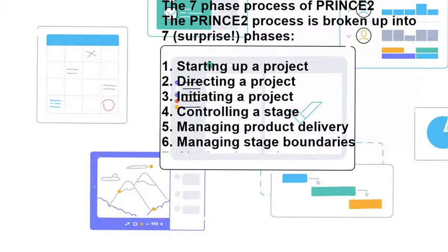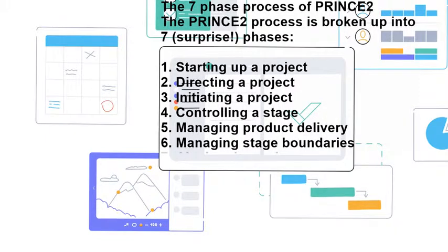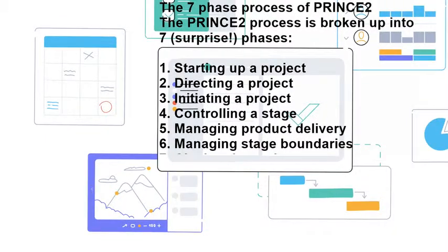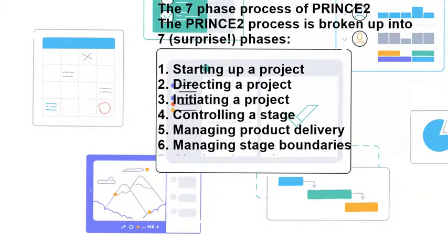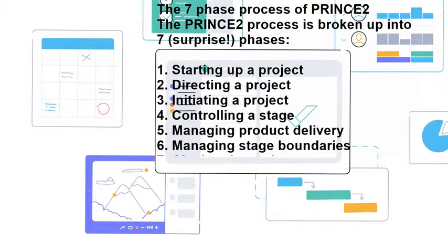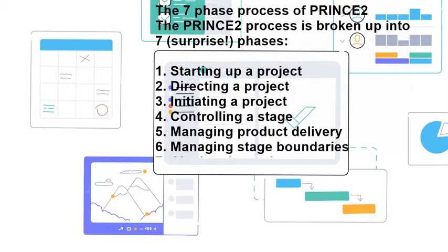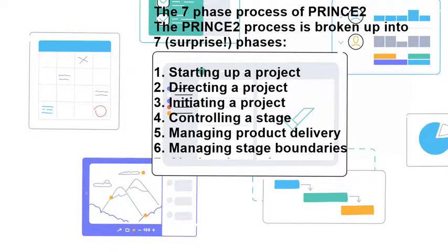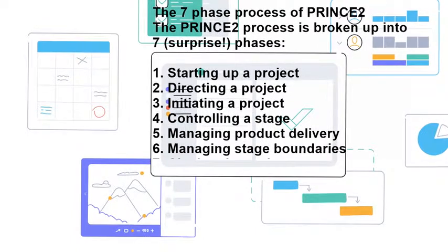The PRINCE2 process is broken up into seven phases. The first is Starting Up a Project. Someone submits a request for a new project called the project mandate. The project mandate is very brief, covering only why the project is necessary and what it will ideally accomplish.